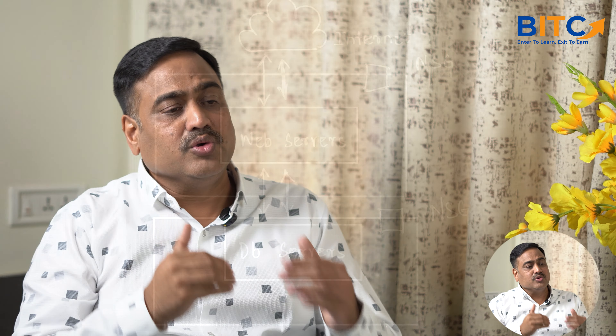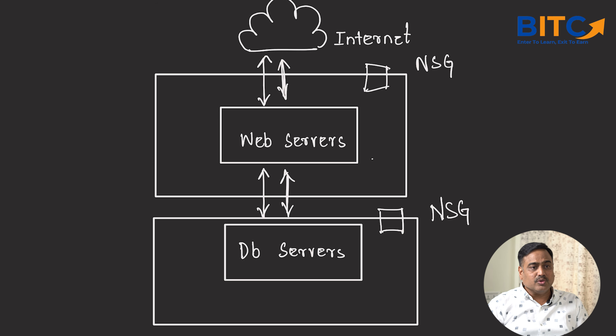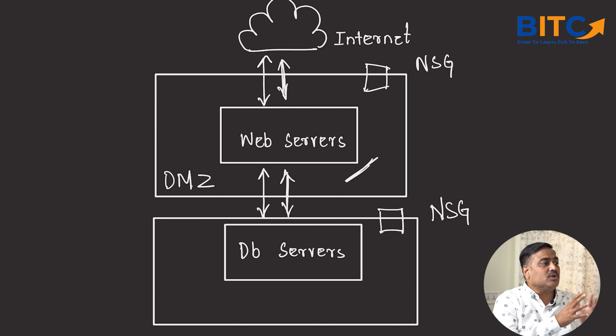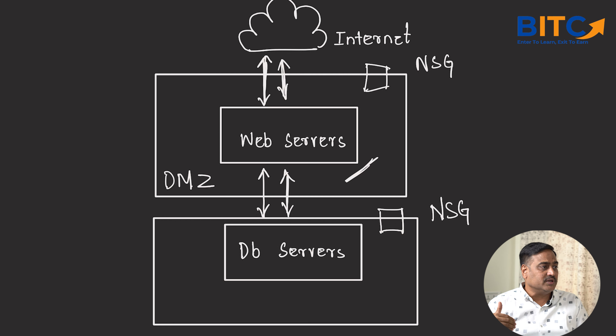In Azure we create a virtual network, and then within it we create all our virtual machines and deploy various workloads — web servers, database servers, application servers, and many others. Imagine doing a lift-and-shift of your entire on-prem application into Azure Cloud. You don't want everything accessible to the internet; you want to create DMZ (demilitarized zones) for certain workloads.